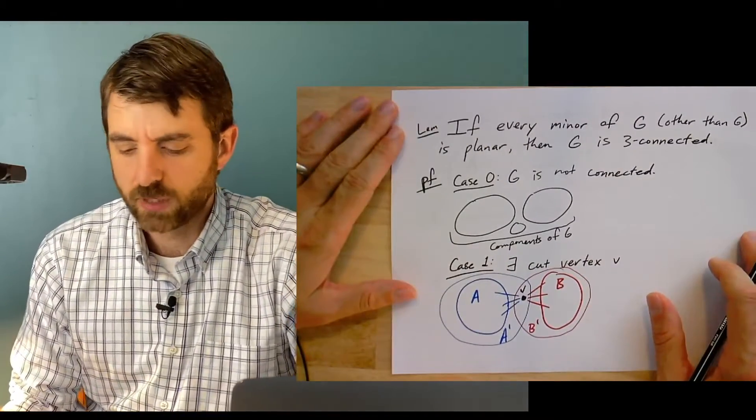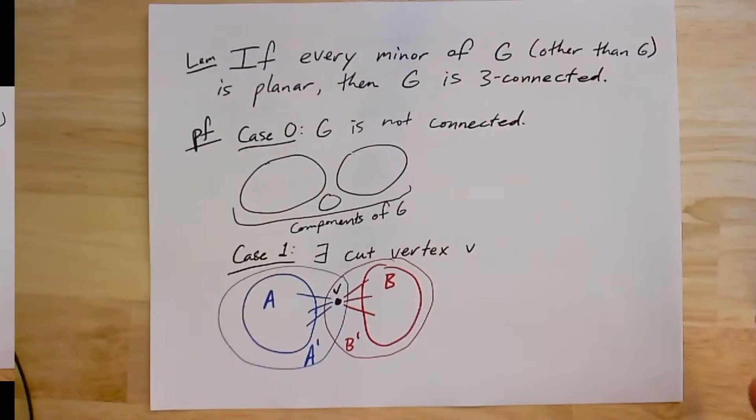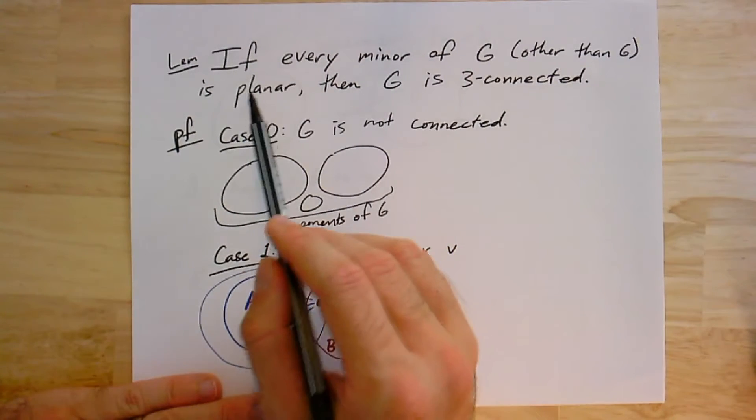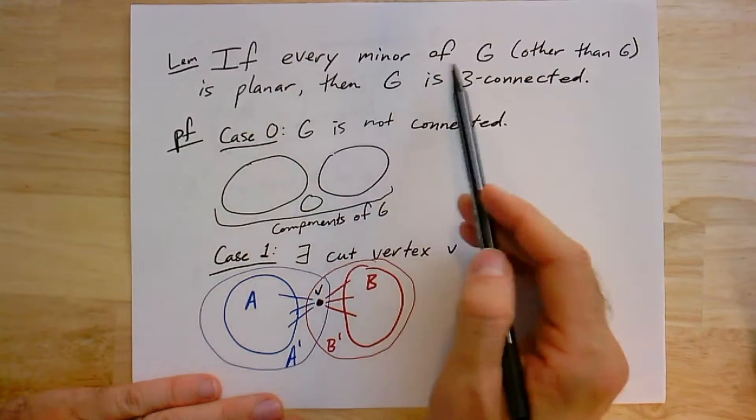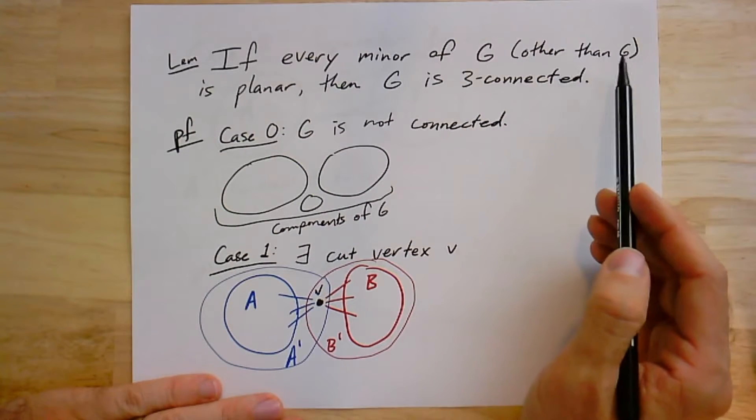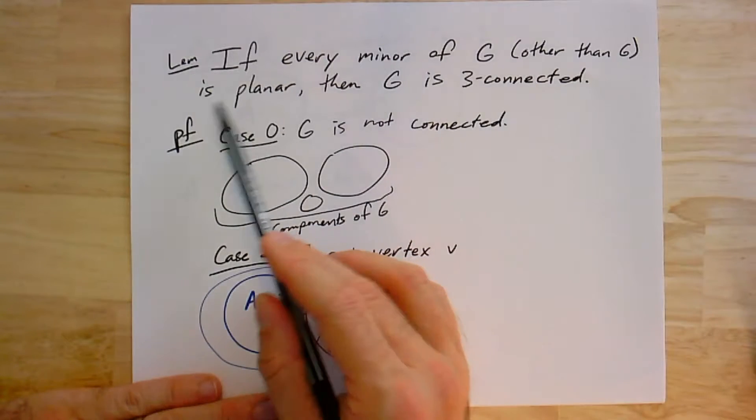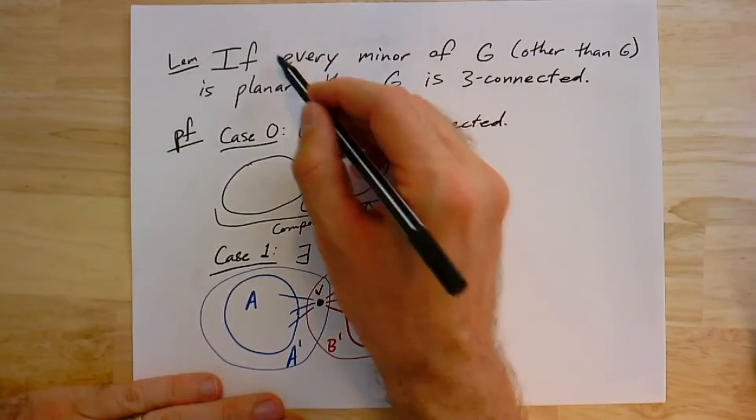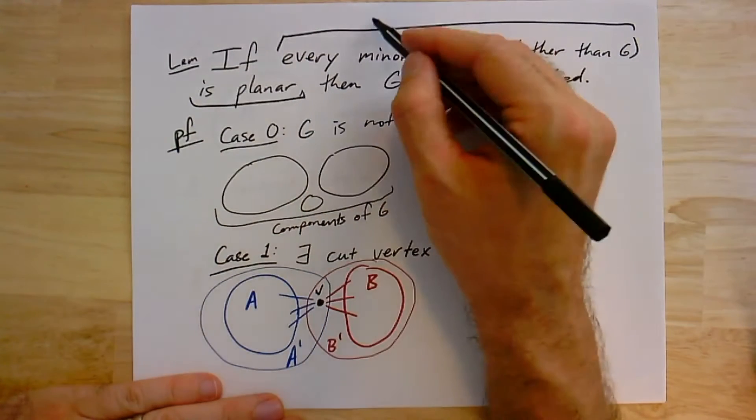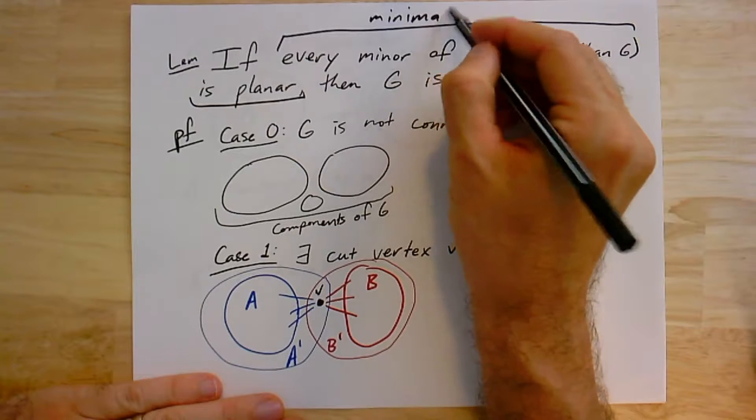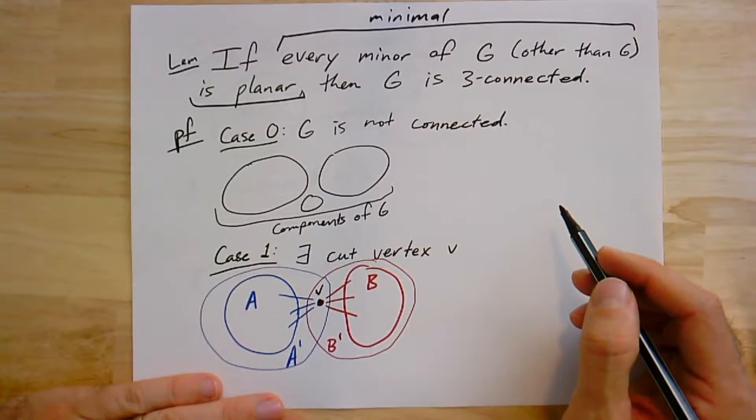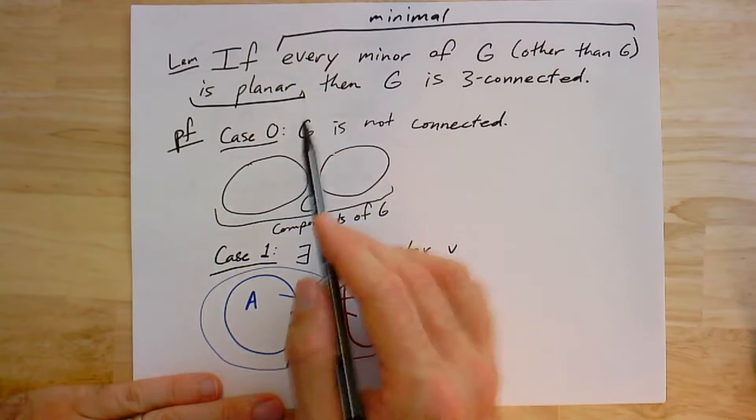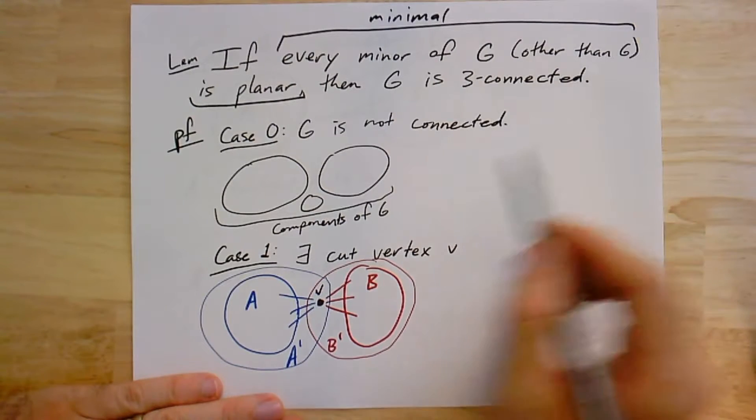Now we can also prove this lemma. This is the main one, this is the one that was supposed to be the main event here. It goes as follows: if every minor of G, other than G itself - every proper minor - if every one of them is planar, then G has to be three connected. This is the sense in which I was calling it minimal before. It doesn't have any minors that are not planar, even though it itself is non-planar. If that's the case, then G has to be three connected.